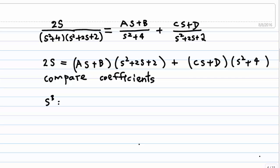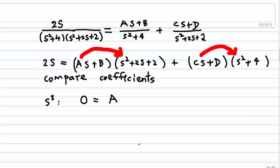To find a, b, c, d, we need to compare the coefficients. Let's compare the coefficient of x³. On the left-hand side, there is no x³, so we write 0. On the right-hand side, there is an ax times x², giving ax³, and a cx times x², giving cx³. So equation 1 is: 0 = a + c.